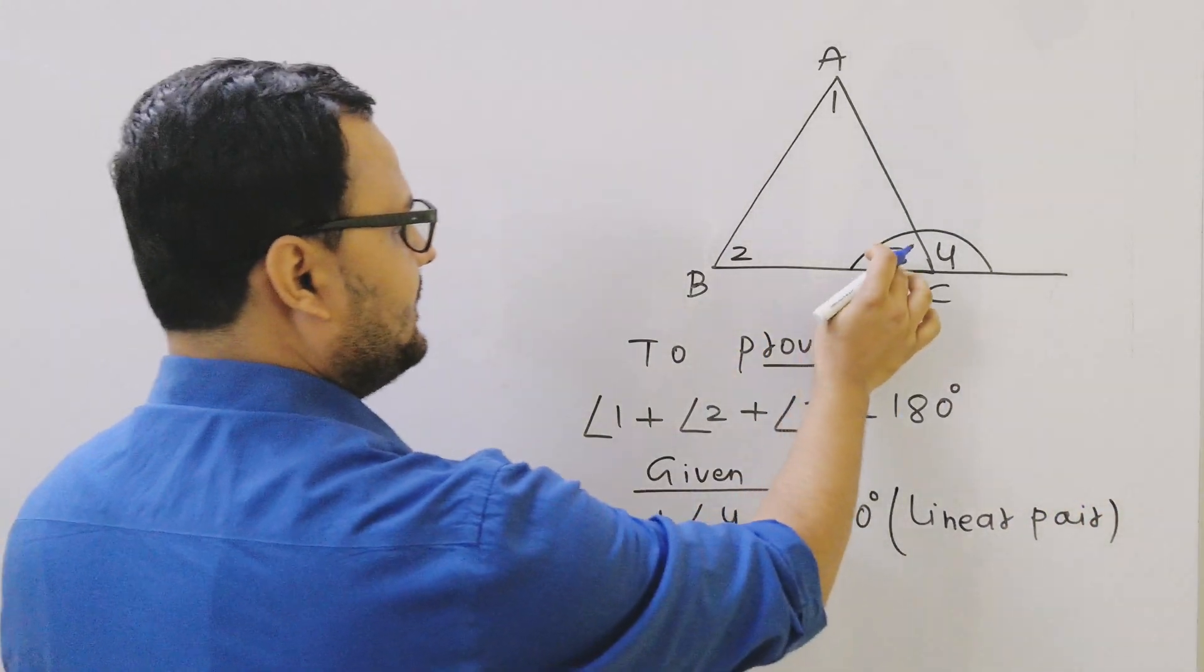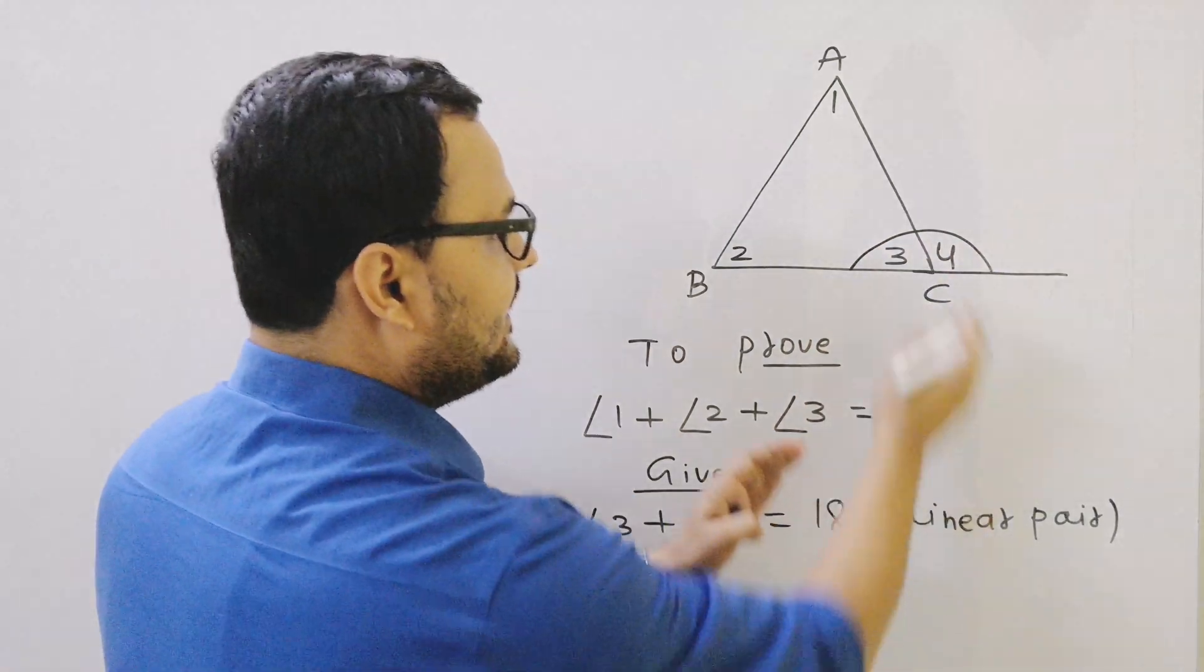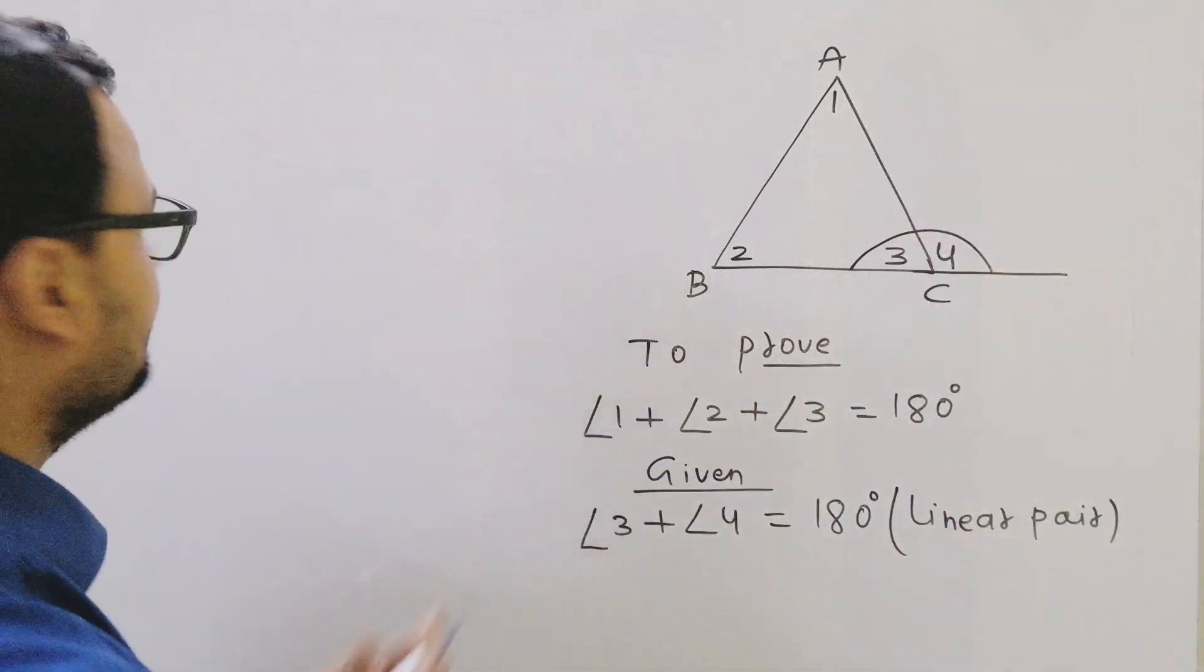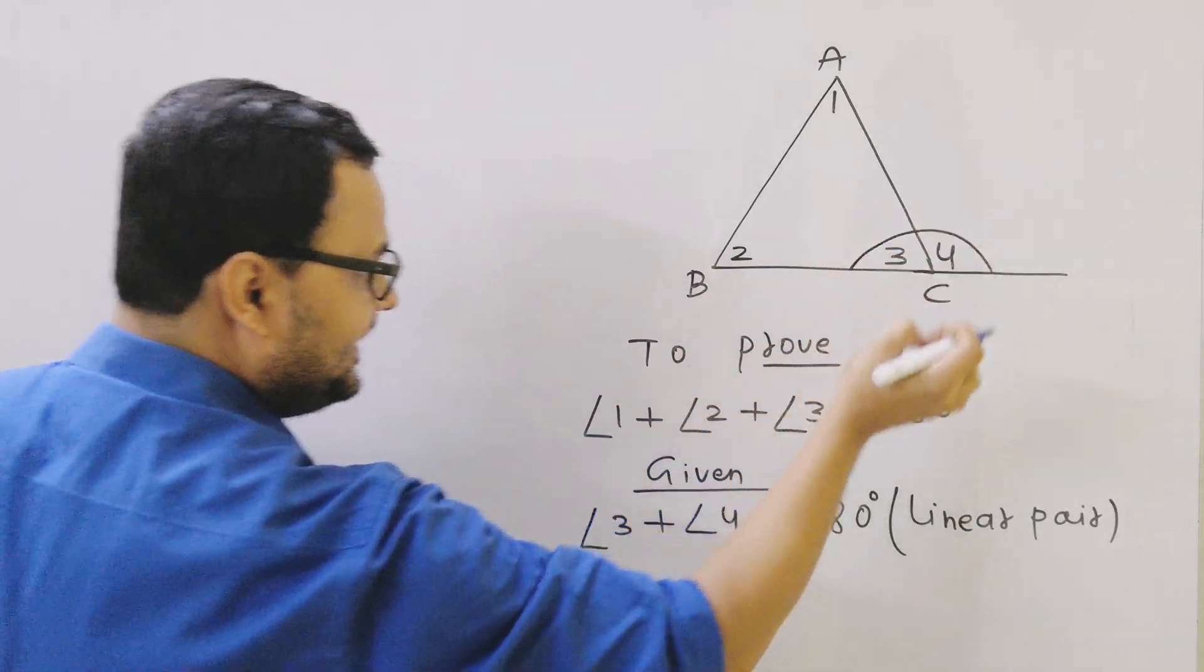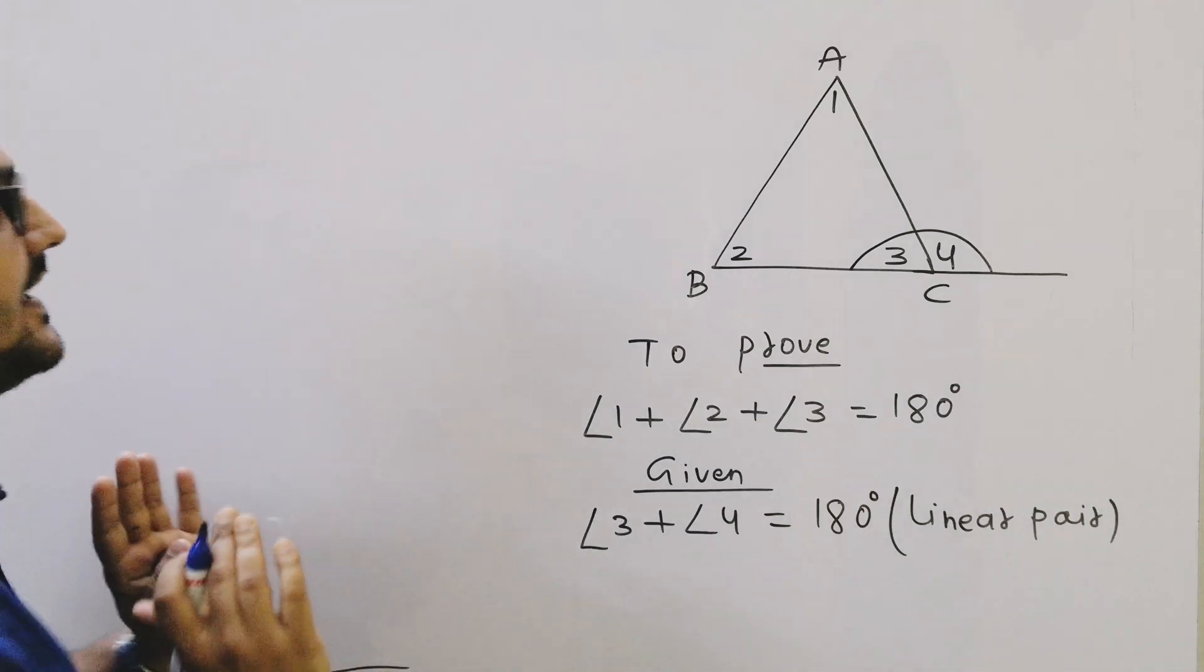Now I am going to use exterior angle theorem once again. I am repeating the same thing, so I can write here angle 4 equals angle 1 plus angle 2. And what is the reason?